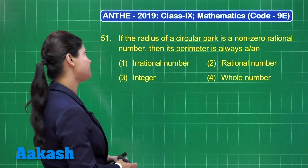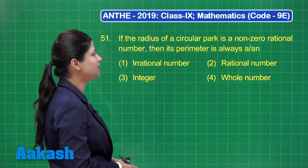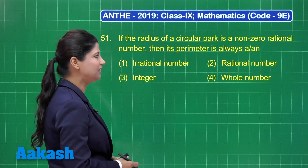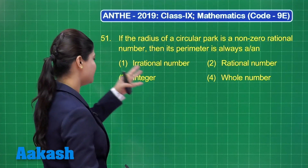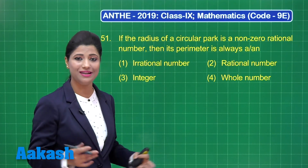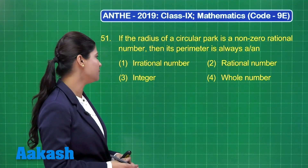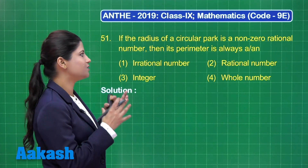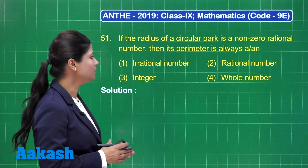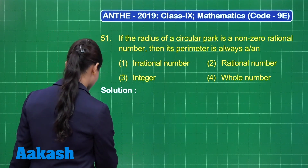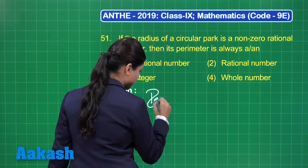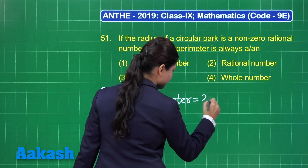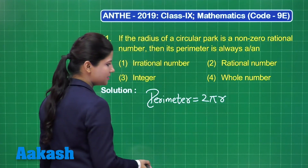Let's take up question number 51. It states that if the radius of a circular park is a non-zero rational number, then its perimeter is always a or an — with four options: irrational number, rational number, integer, or whole number. Let's talk about a circle with radius as a non-zero rational number. The perimeter of a circle is given by the formula 2π times r, where r is the radius.